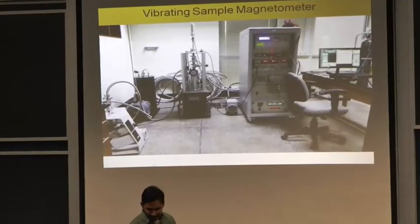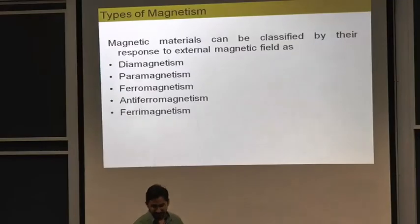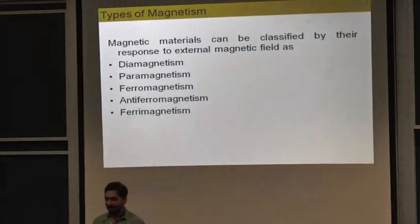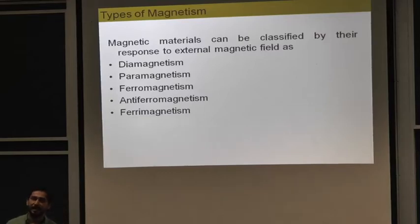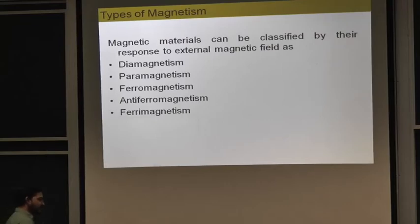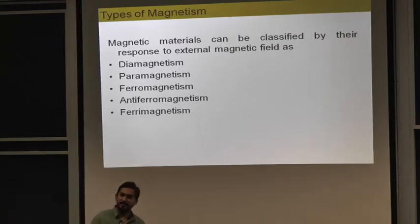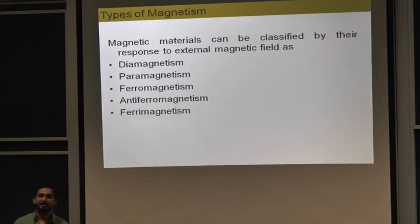Discussing about types of magnetism: how a magnetic material will behave in a magnetic field determines the type of magnetism inside the material. There are five categories: diamagnetism, ferromagnetism, paramagnetism, antiferromagnetism, and ferrimagnetism.